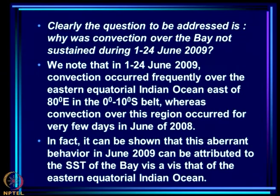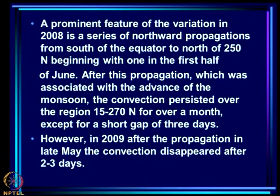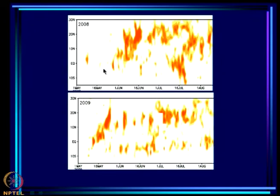The key question is: why was convection over the bay not sustained during 1st to 24 June 2009? We note that during this period, convection occurred frequently over the eastern equatorial Indian Ocean, east of 80°E in the 0 to 10°S belt, whereas in 2008 convection over this region occurred for very few days. So for 2009 there is a large number of days with convection in the equatorial region.